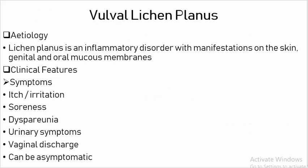Vulval Lichen Planus. Etiology: It is an inflammatory disorder with manifestations on skin, genitalia, and oral mucous membranes. Clinical Features — Symptoms: Itch, irritation, soreness, dyspareunia, urinary symptoms, vaginal discharge. Can be asymptomatic.